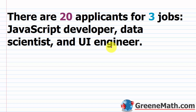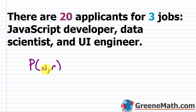Here, the order is very important because it's a different result if I get a job as a JavaScript developer versus as a data scientist. So because the order is important, we want to use our formula for permutations. The N here is going to be 20, and the R here is going to be 3.